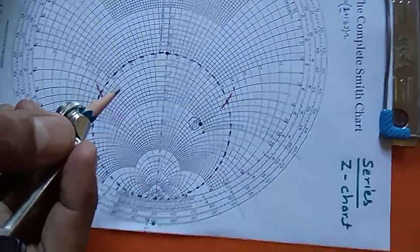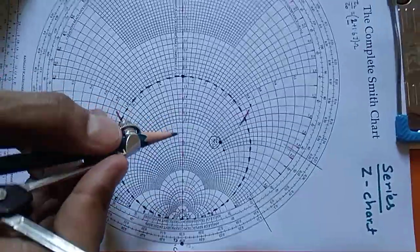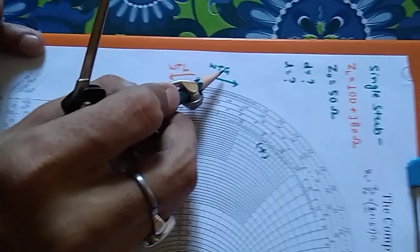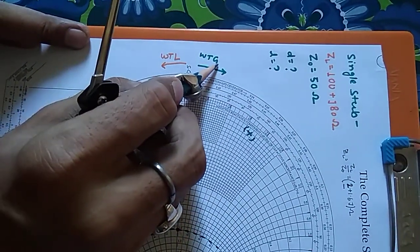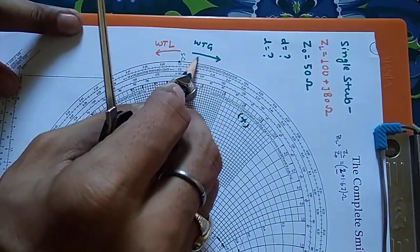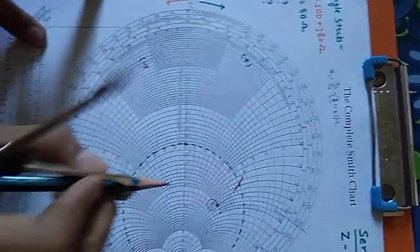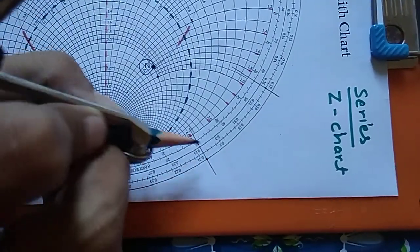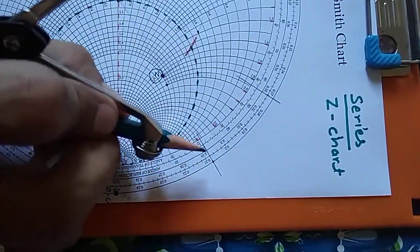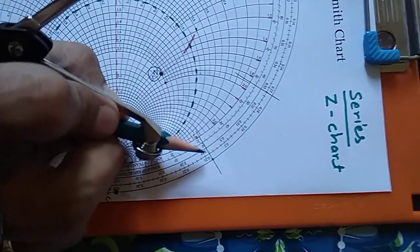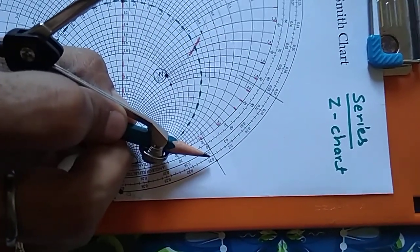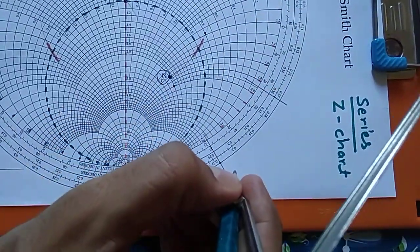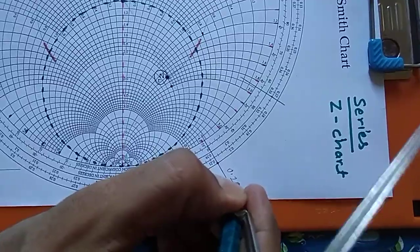One important thing to remember: we are moving from load to the generator. On the Smith chart we can see WTG, which represents wavelength towards generator. Whenever we are plotting the value, we will move clockwise. At the intersecting point on the outer circle, we read the value — it is between 0.20 and 0.21, approximately 0.208 lambda. All these values correspond to the wavelength lambda.